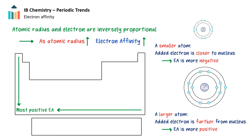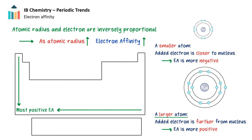For different elements, across a period the electron affinity becomes more negative because the atom becomes smaller — the added electron is closer to the nucleus and more strongly attracted. Down a group, the electron affinity becomes less negative because the number of shells increases and the atom becomes larger, so the added electron is further from the nucleus and less strongly attracted.